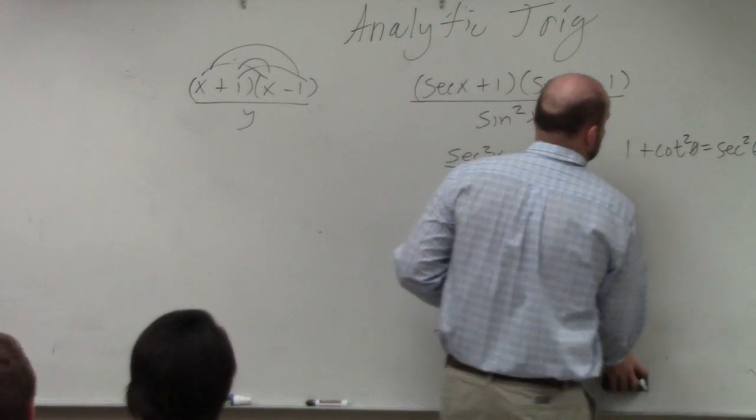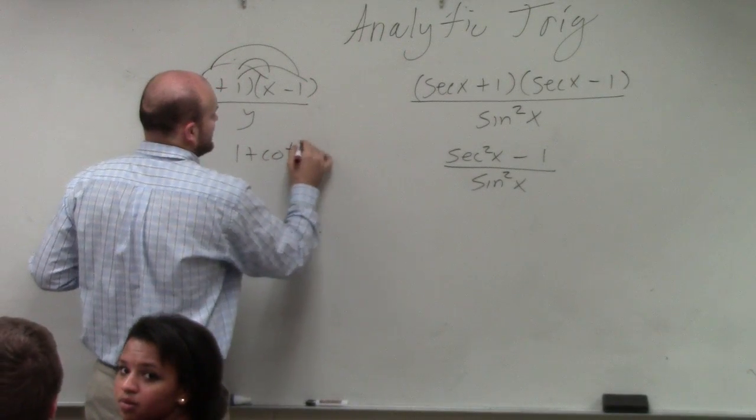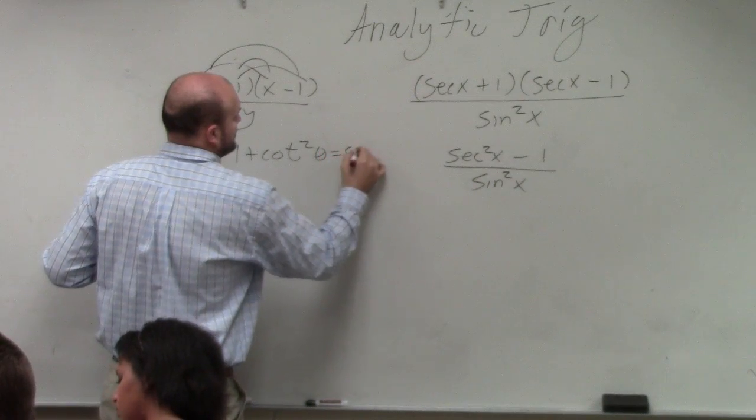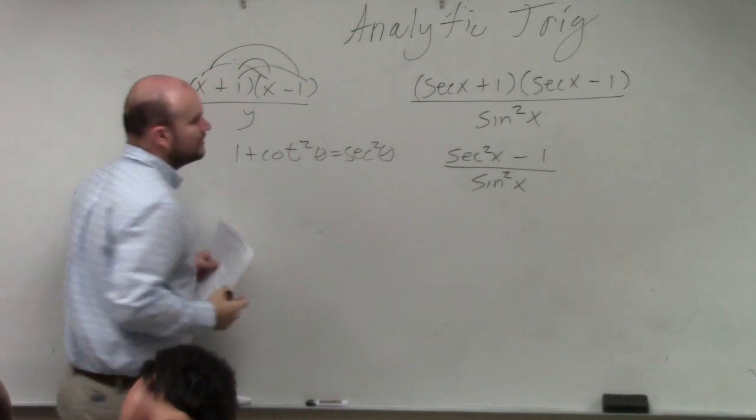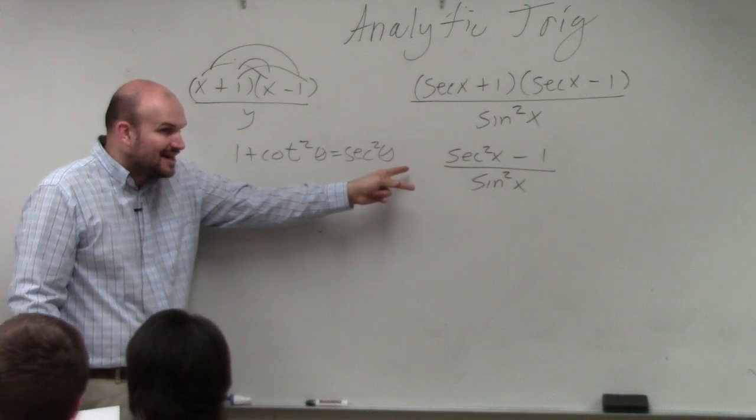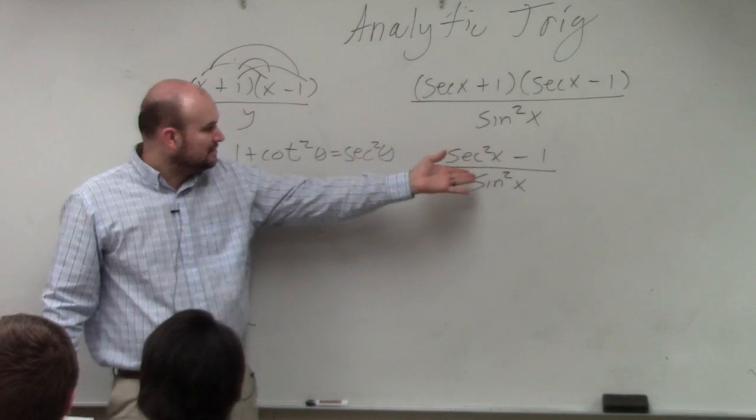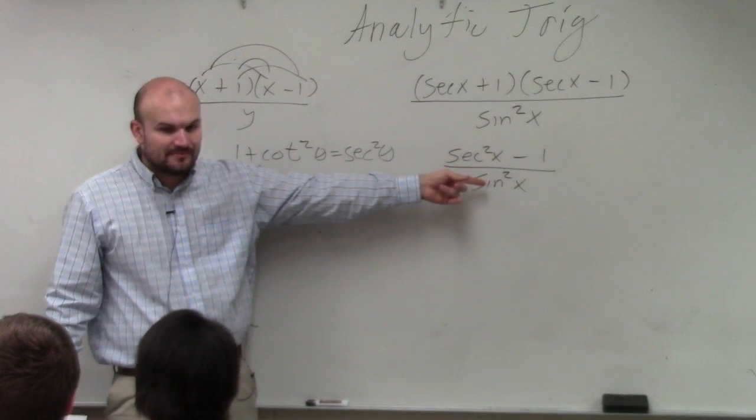Yeah, there we go. 1 + cot²θ = sec²θ. Now, would you guys agree with me if I just subtracted the 1 to the other side, then they would be sec² minus 1? This is x, not theta. But do you guys see how it would be the same thing?